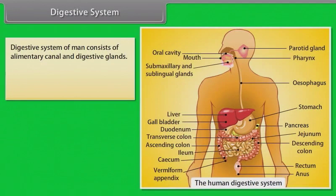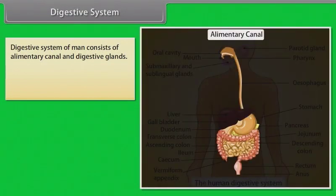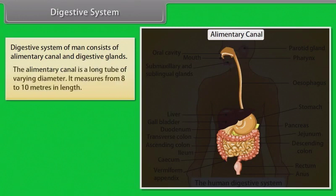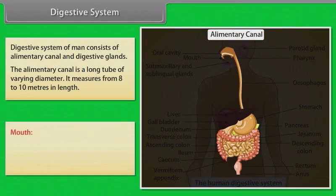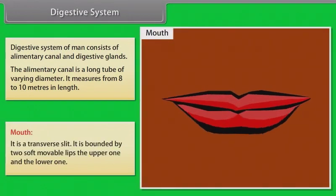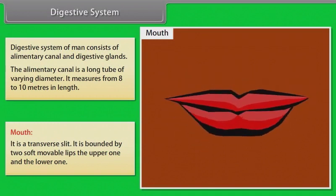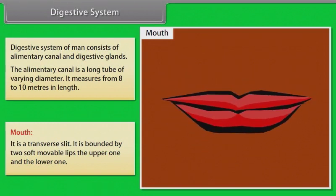The digestive system of a human consists of the alimentary canal and digestive glands. The alimentary canal is a long tube of varying diameter. It measures from 8 to 10 meters in length. The first part of the alimentary canal is the mouth. It is a transverse slit bounded by two soft movable lips — the upper one and the lower one.